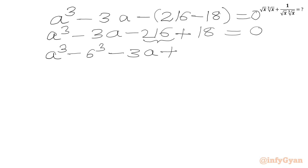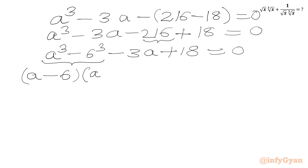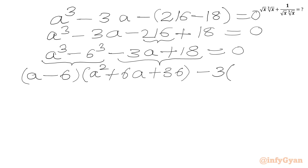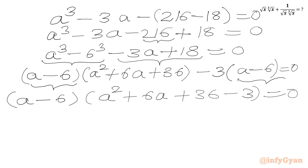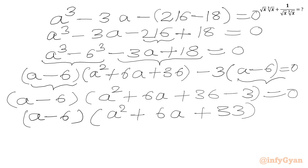So we have a³ - 6³, then minus 3a + 18 = 0. Applying the a³ - b³ identity gives (a - 6)(a² + 6a + 36), then taking -3 common from the remaining terms gives -3(a - 6). Taking (a - 6) overall as a common factor, we get (a - 6)(a² + 6a + 36 - 3) = 0, or (a - 6)(a² + 6a + 33) = 0.